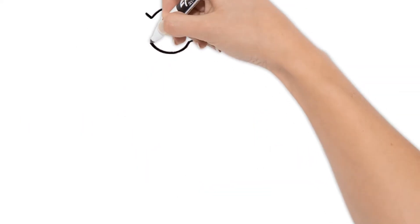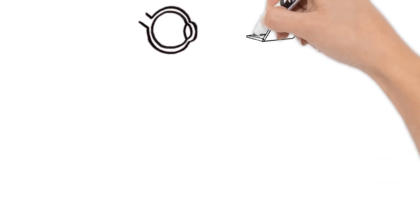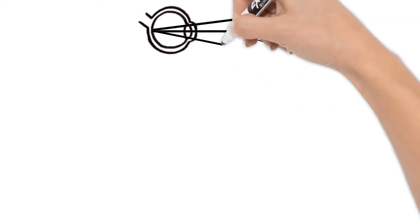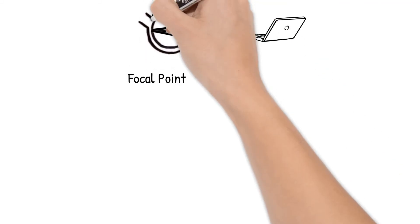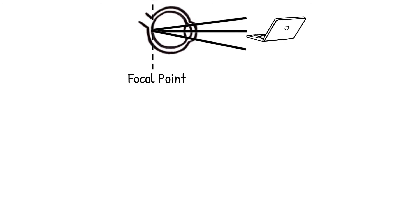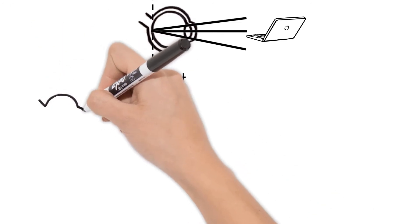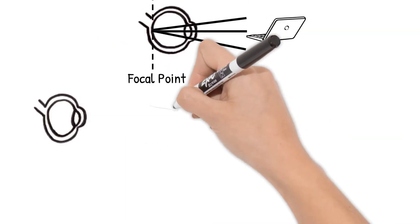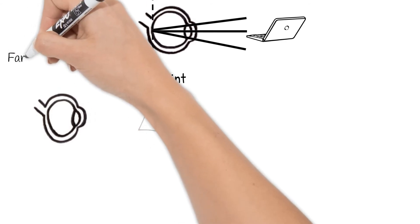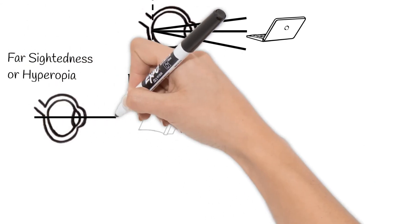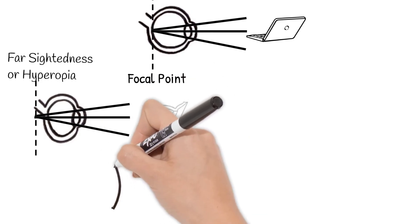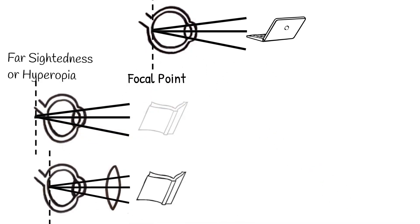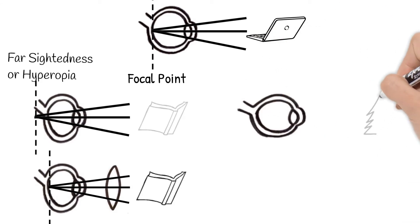Ideally, your cornea, lens, and eyeball are all shaped perfectly to see clear, nice images. But often there is an issue causing the focal point to not land right on your retina like it should. If your eyeball is too short, close objects will be blurry to you — this is called farsightedness or hyperopia. The spot where the image would be in focus is past your retina, and a convex corrective lens can fix it.